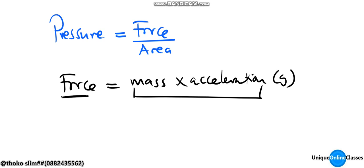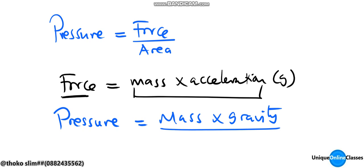So from our formula, pressure is equal to mass times acceleration due to gravity, then divided by area.